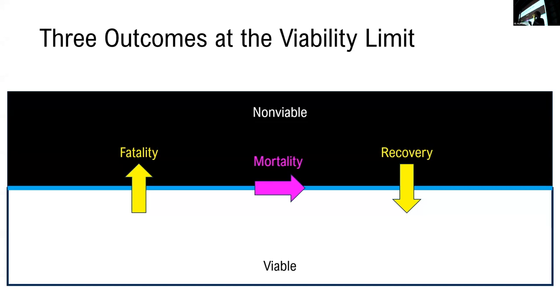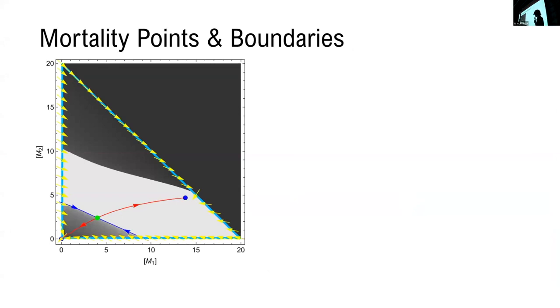In order to do that, we're going to need to find the mortality points that themselves remain asymptotically viable. And if we go back to the protocell system and we plot the vector field along the viability limits, we see that there is one such transition point that remains asymptotically viable.